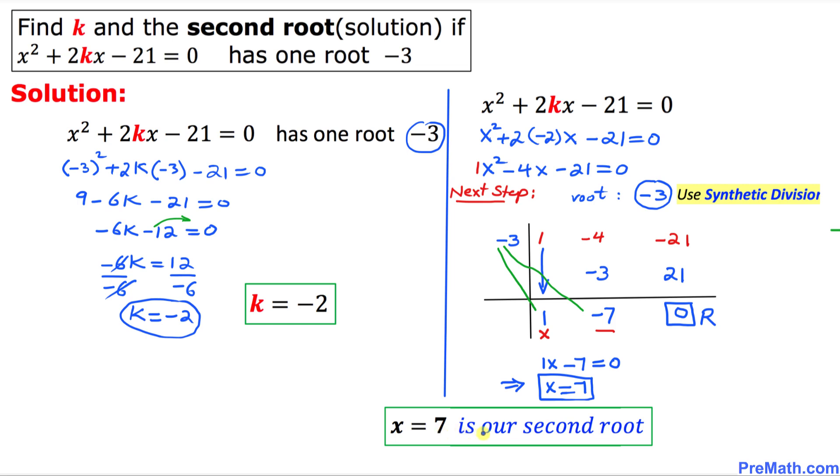So thus x equal to 7 turns out to be our second root. Thus we figured out both k value and the second root. And that's our final answer.